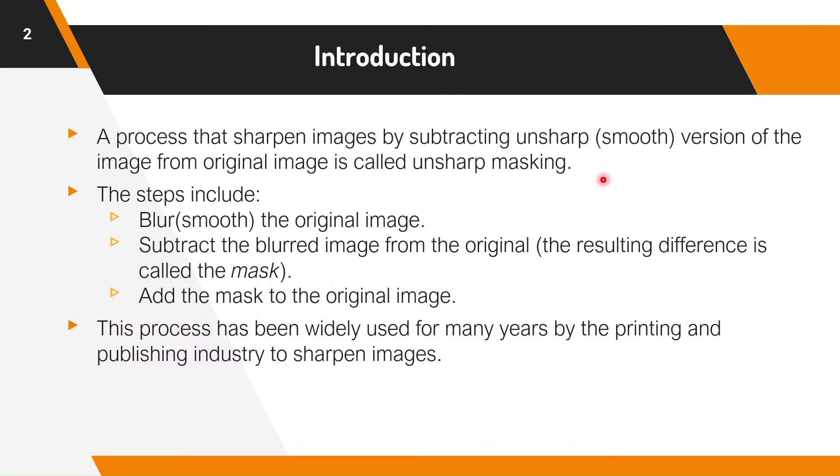The steps include blurring the original image, that is performing low pass filtering, and subtracting the blurred image from the original image. The resultant is called the mask, and adding the mask to the original image so that the final image is sharpened. This process has been widely used for many years by the printing and publishing industry to sharpen images.